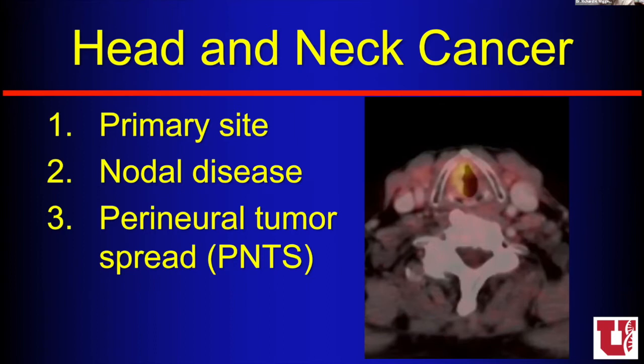There's a tumor centered at this location — it's this big, it crosses midline, it invades bone, it invades muscle. I look for lymph nodes and describe where they are, how big they are, and whether they're on both sides or one side. And I look for perineural tumor spread. So I'm going to think about those three big things every time I'm looking at a head and neck cancer case.